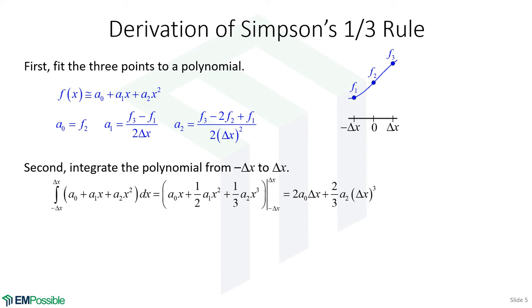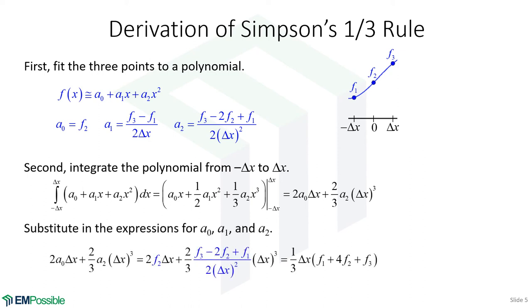Now that we're here, we can substitute in our expressions for the polynomial coefficients. So, here's the expression from above. We've substituted in our polynomial coefficients, and then we multiply everything out and simplify, and we end up with Simpson's one-third rule, and it's called the one-third rule because here is the one-third here. It's essentially a sum of the function values. Yes, we're multiplying f2 by 4. Then we multiply by delta x, and then we divide by 3.